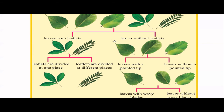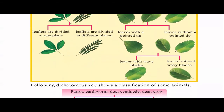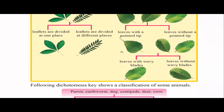Moving to the other side of the dichotomous key: among the three remaining leaves, one has a pointed tip, so we separate into leaves with a pointed tip and leaves without a pointed tip. That branch is complete with one element. For the remaining two, we differentiate by wavy blade: leaves with a wavy margin and leaves without a wavy margin, giving us single elements at each end.